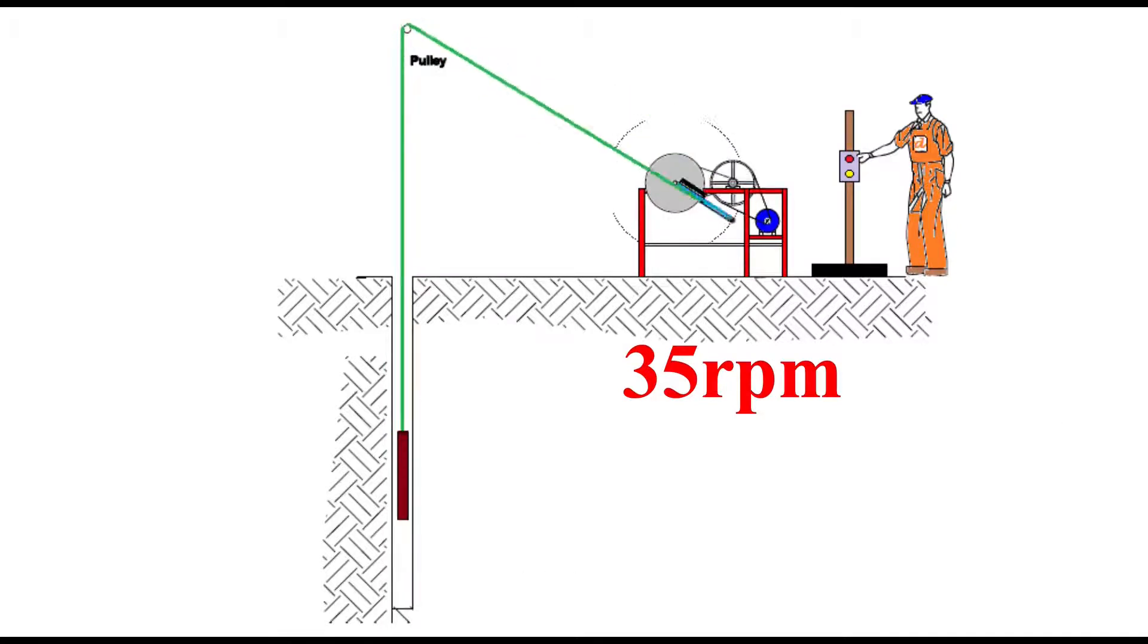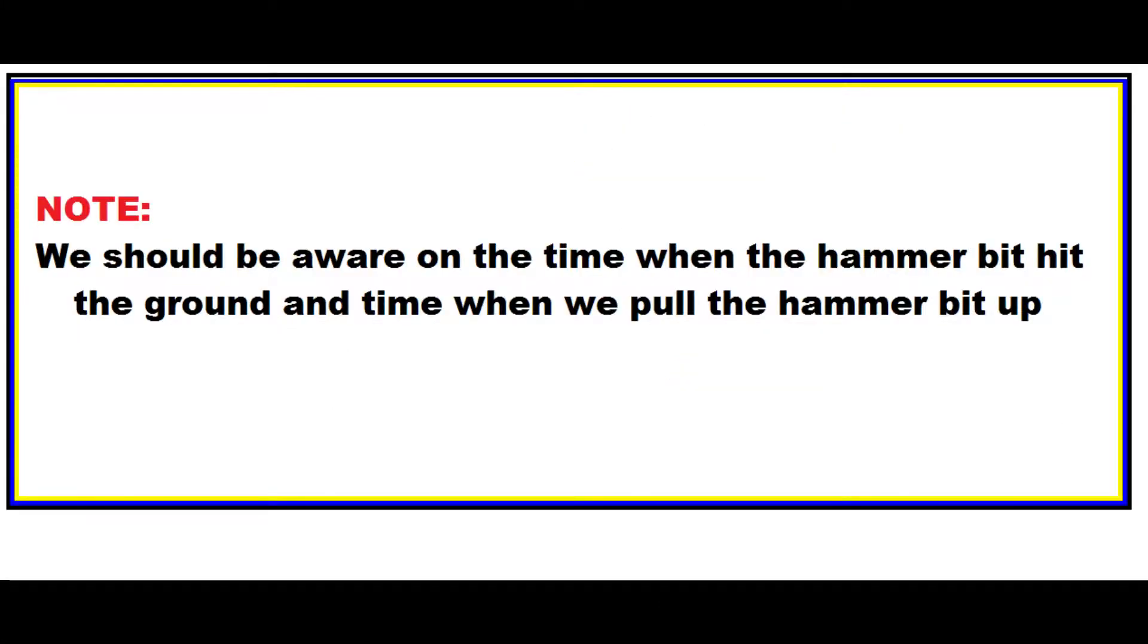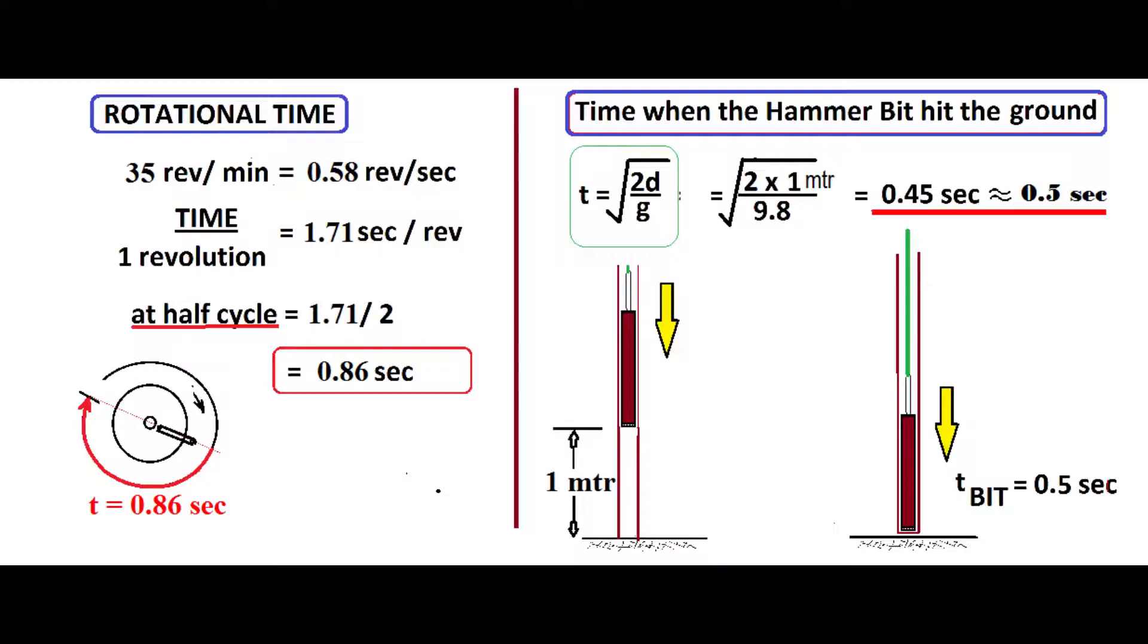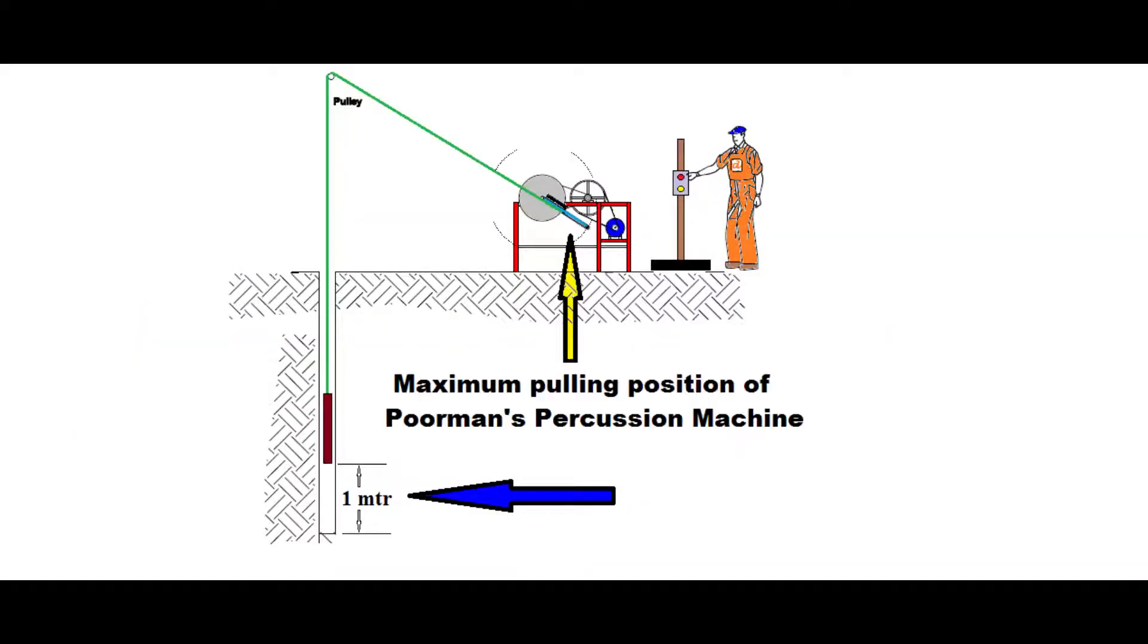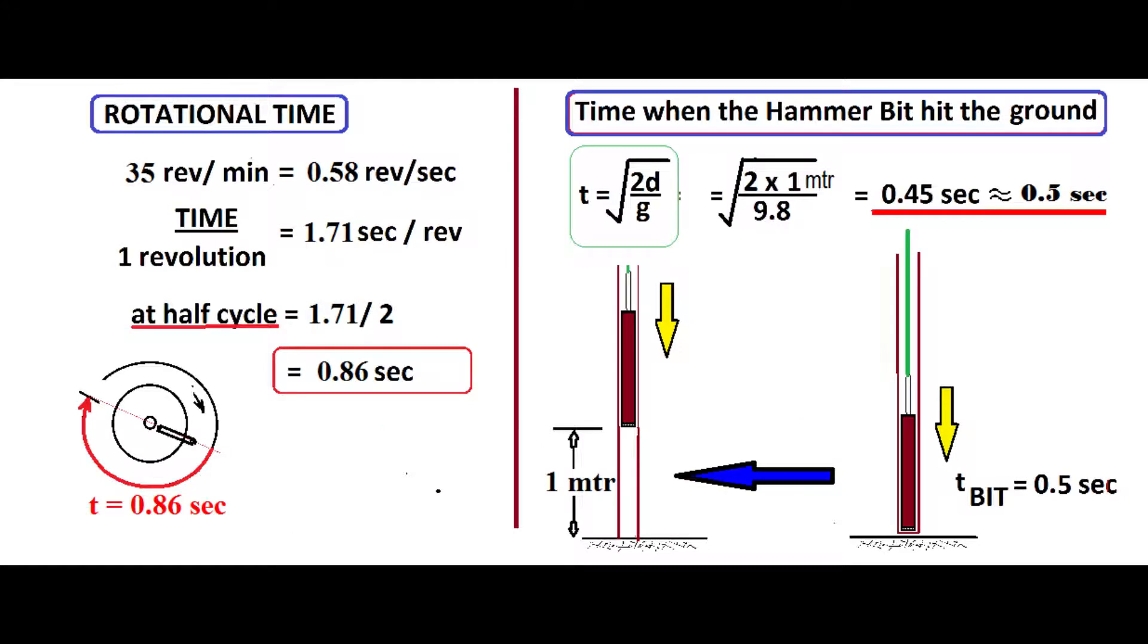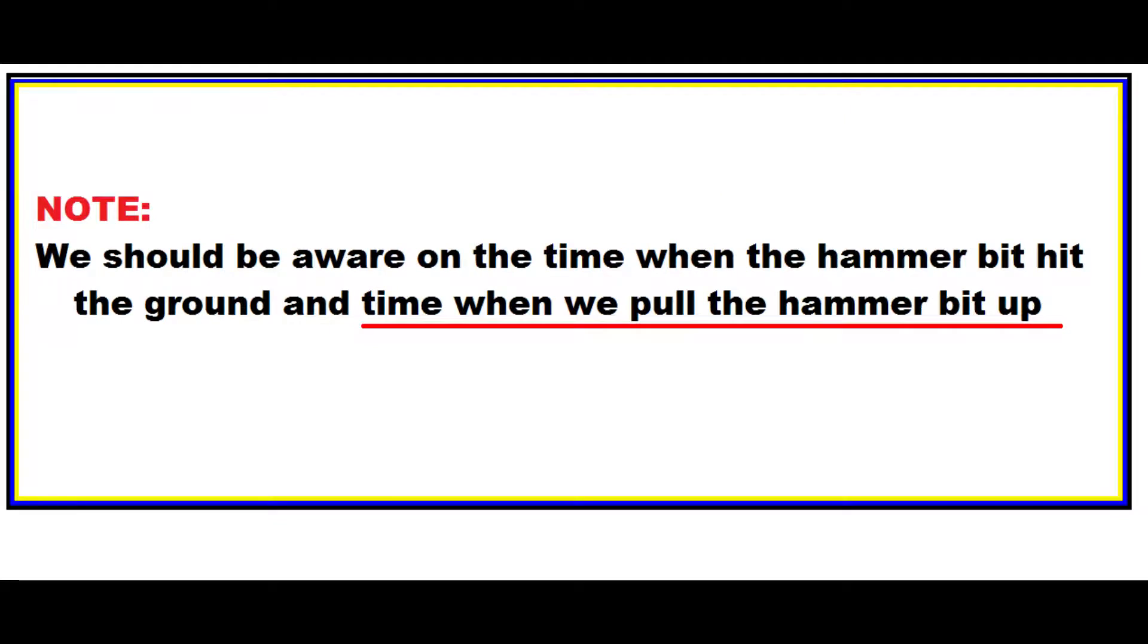So the important thing we need to know is the time when the hammer bit hit the ground. So the formula is: time equals the square root of two times distance over g, which is approximately 0.5 seconds.